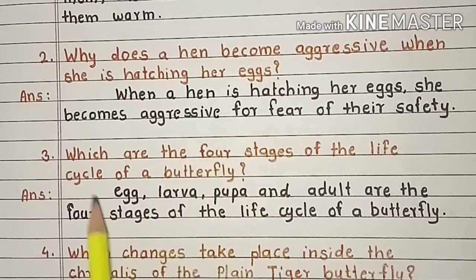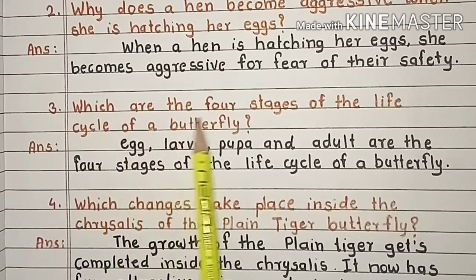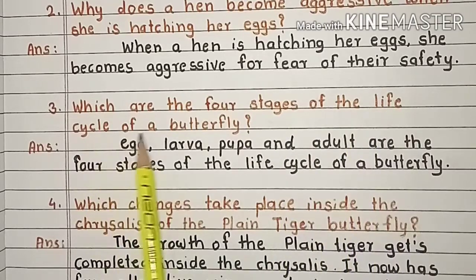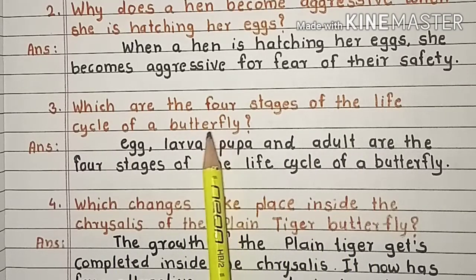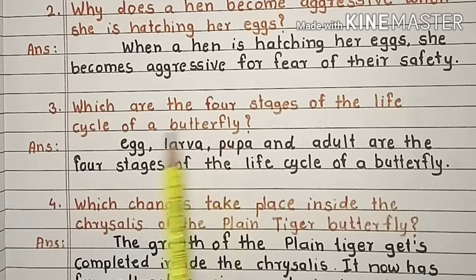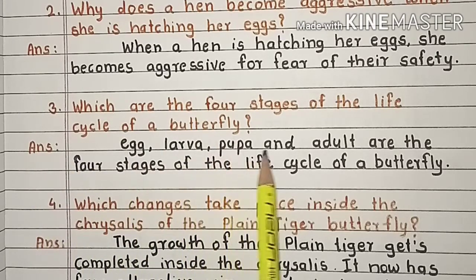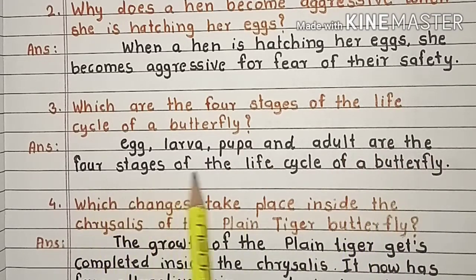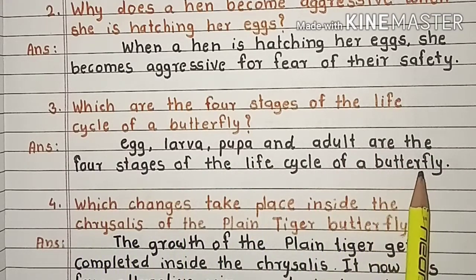Question 3. Which are the four stages of the life cycle of a butterfly? Answer. Egg, larva, pupa, and adult are the four stages of the life cycle of a butterfly.